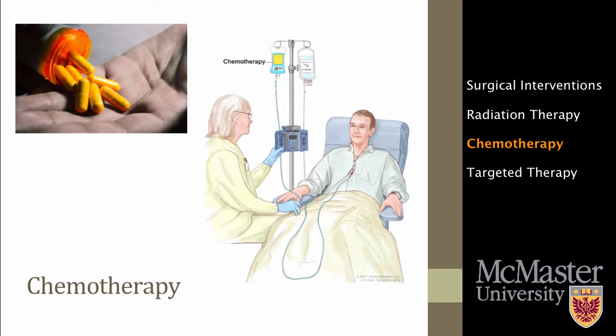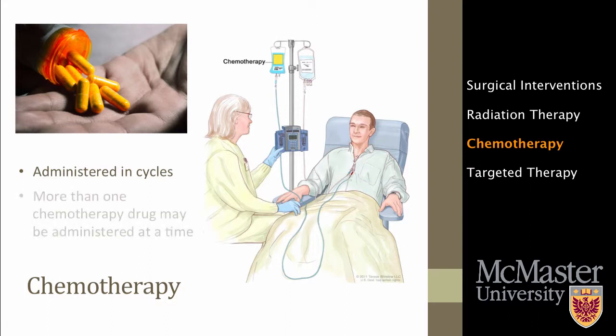Chemotherapy is a treatment which uses strong drugs to kill the cancer cells. The chemotherapy medication is either injected directly into the veins or can be taken by mouth in the form of a pill. Chemotherapy is most effective at killing rapidly dividing cells, such as cancer cells, but also can damage healthy cells that divide quickly, such as those found in the skin, hair, and nails. Chemotherapy is administered in cycles which allows for the body and the healthy cells to recover. Depending on the patient, more than one chemotherapy drug may be administered at a time. Patients who are unable to tolerate multiple chemotherapy drugs may be given only one.